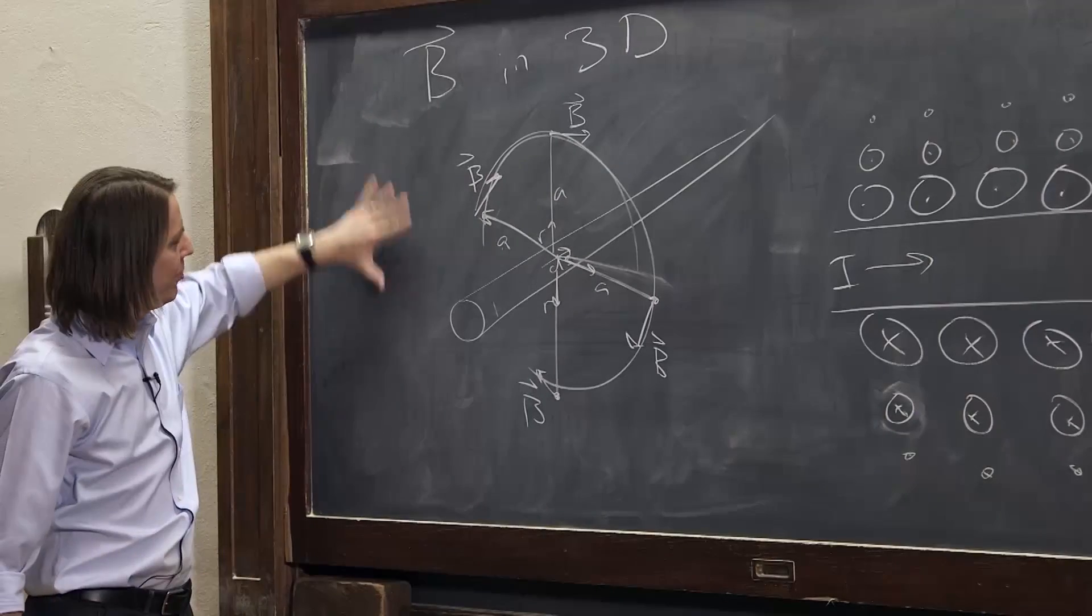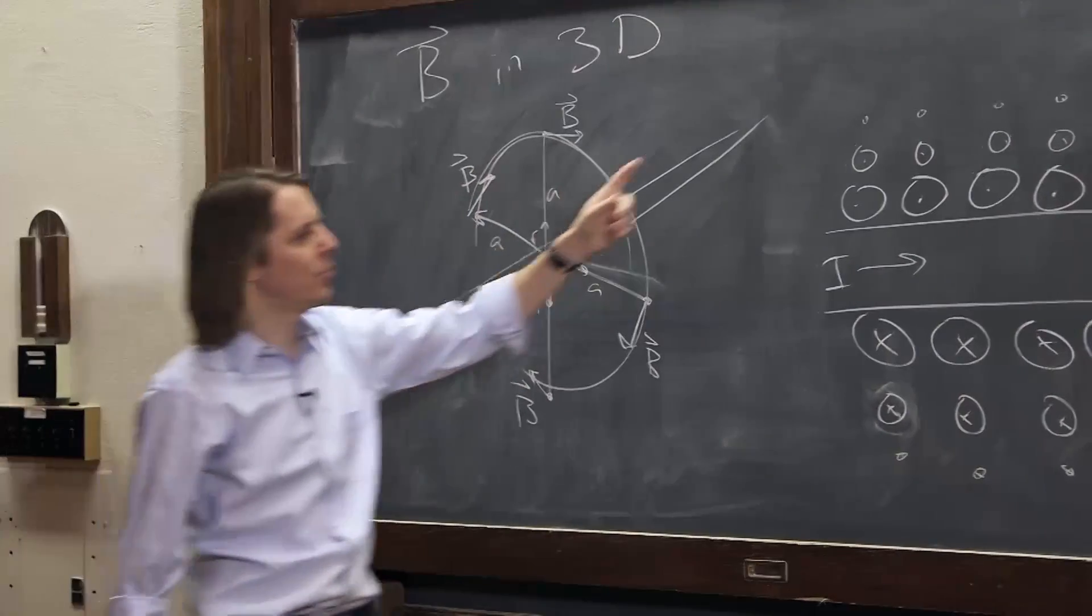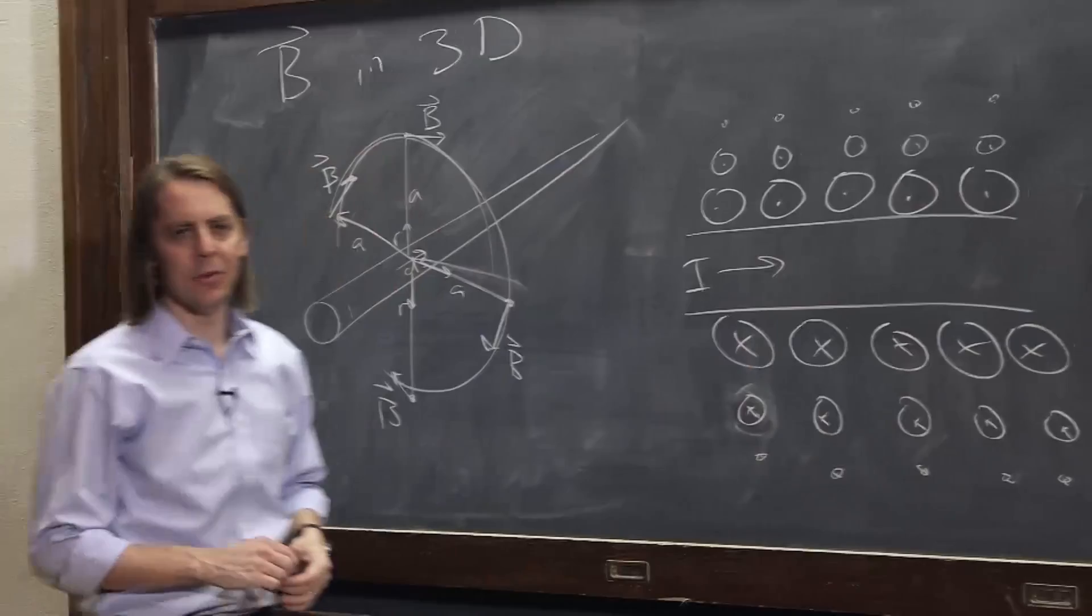So it all makes sense. We only calculated it in one plane in 2D, but it actually matches perfectly with what we said before about the B field in 3D going around the wire.